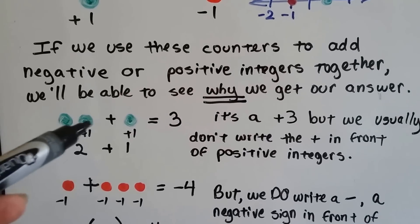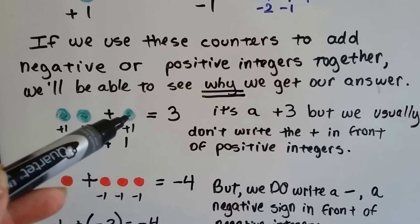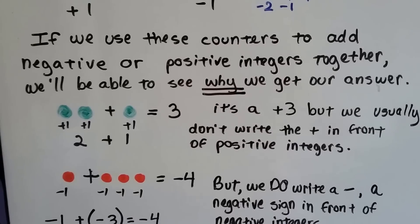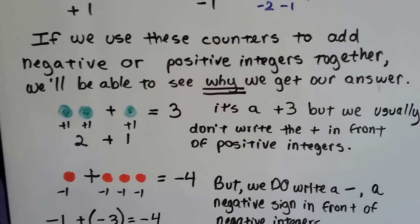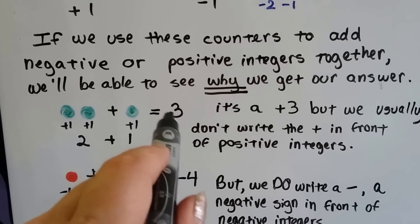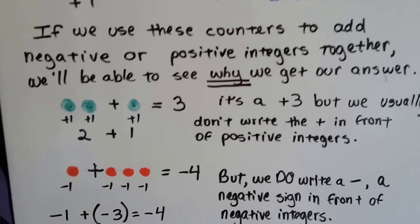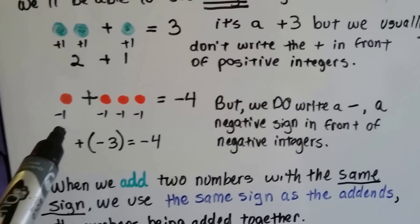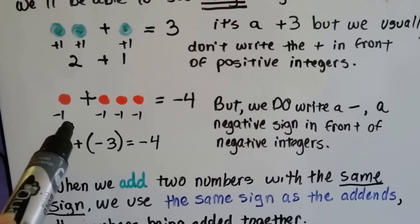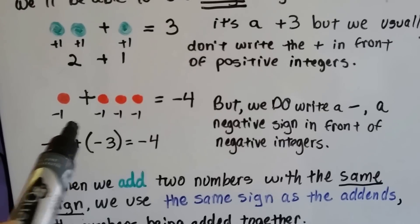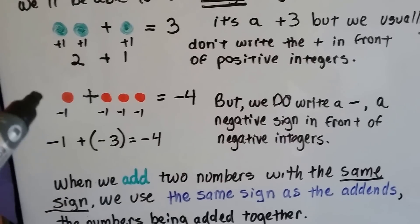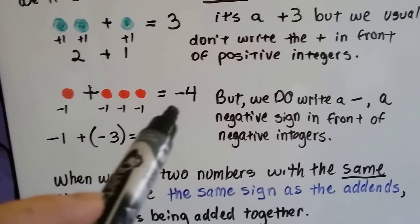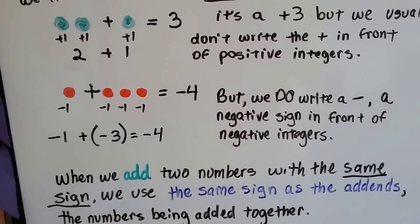Here's two positives. That's a positive two plus a positive one, which gives us a positive three. We don't write the plus sign in front of positive integers — we just know when there's nothing there that it's positive. But we do write a negative sign in front of negative integers. If we've got a negative one and we add negative three to it, we now have negative four.